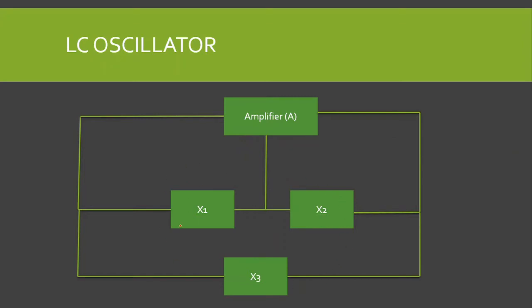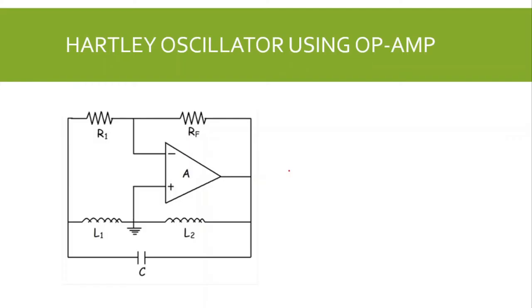These reactive elements act as a feedback circuit — the LC tank circuit. We also have an amplifier, which can be an operational amplifier, a field-effect transistor (FET), or a BJT. The amplifier provides the basic amplification needed, and the frequency of oscillation is set by the reactive elements. Let us now discuss the Hartley oscillator using the operational amplifier.